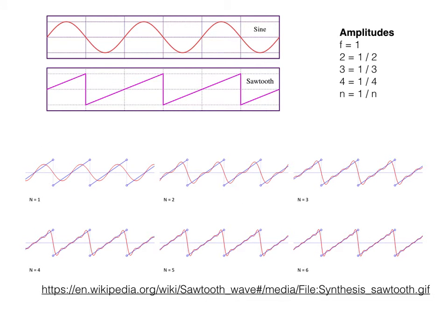The sawtooth wave is the richest of the basic oscillators. The sawtooth wave sounds harsh. But by modifying the sound with filtering, we can produce a wide range of different colors.